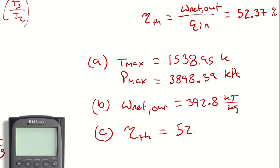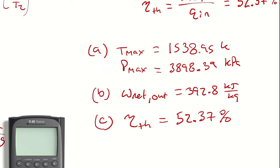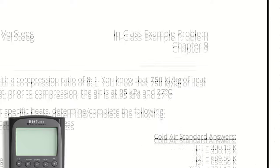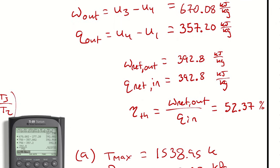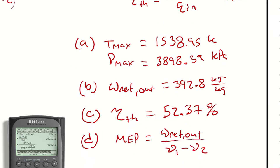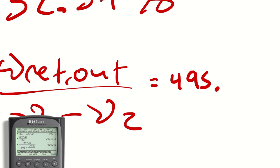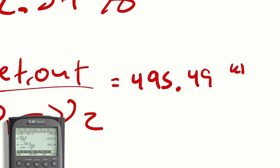Now for the actual things I asked for. Maximum temperature and pressure. Those are going to be 1538.95 and 3898.39 kilopascals. Their network output we got, that was 392.8. Thermal efficiency was 52.37%. And then for part D, I wanted the mean effective pressure, which is going to be our network out divided by V1 minus V2. We are going to calculate 392.8 divided by the quantity 0.906 minus 0.906 divided by 8. So 495 kilopascals.